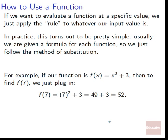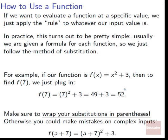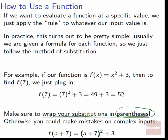For example, if f of x equals x squared plus 3, to find f of 7 we plug in: 7 squared plus 3. 7 squared is 49, and 49 plus 3 gives us 52. For a slightly more complex input like a plus 7, we have to put it in parentheses because it's not just a that gets squared — it's the whole quantity a plus 7. So it's (a + 7) squared plus 3. It's not a squared plus 7, and not a plus 7 squared — it's the whole thing squared, then plus 3.